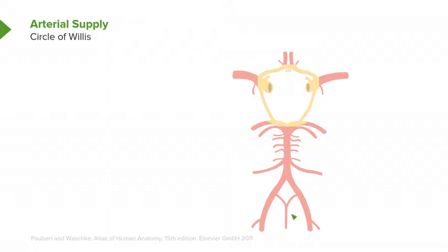The vertebral arteries are shown here, these major vessels, and they come together, joined to form the basilar artery that we see here.